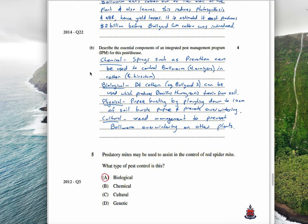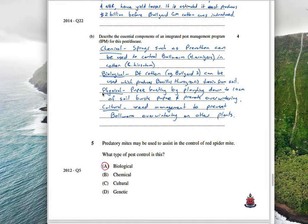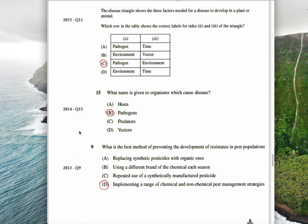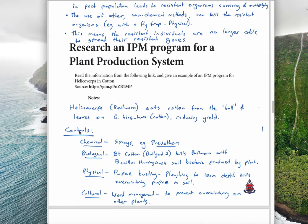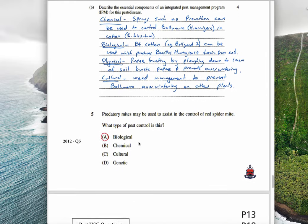This question described the essential components of an IPM program. You need to really do all four. It's four marks: chemical sprays such as Prevathon, biological BT cotton example Bollguard 2. This is just taken straight out of the previous page. Physical pupae busting, plowing down to 10 centimeters of soil and prevents overwintering. And then cultural weed management to prevent bollworm overwintering on other plants. You can see I've just taken that straight from here. It's exactly the answer to that question.